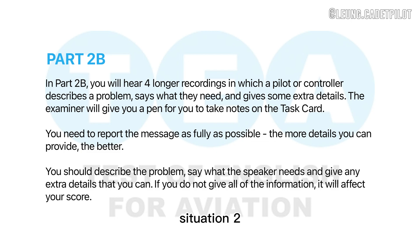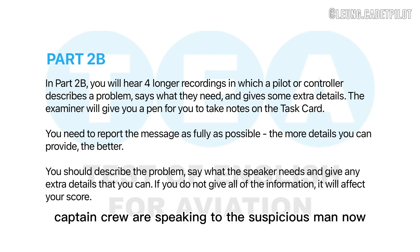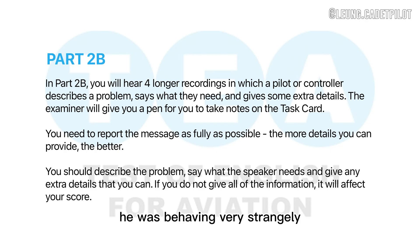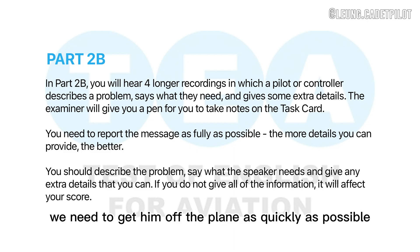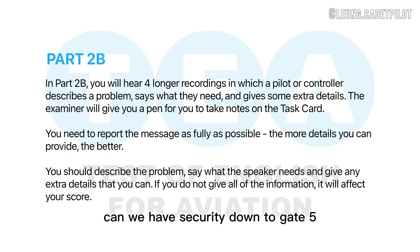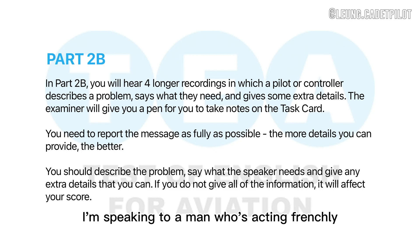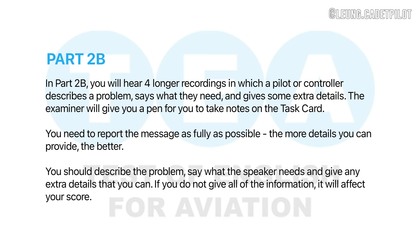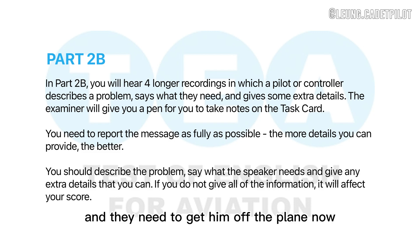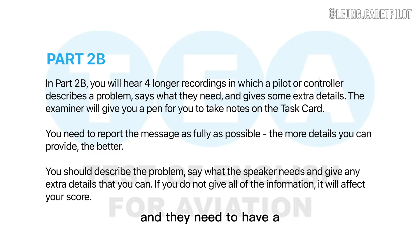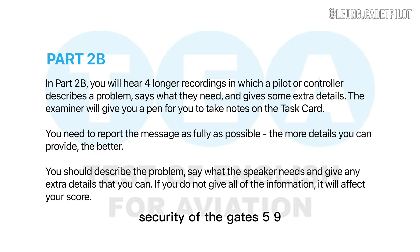Situation two. Captain, crew are speaking to the suspicious man now. He was behaving very strangely. We need to get him off the plane as quickly as possible. Can they have security down to gate five niner to speak to him? Response: The cabin crew are speaking to a man who is acting strangely. They need to get him off the plane and have security at gate five niner.